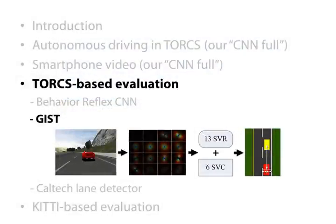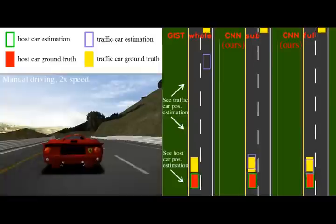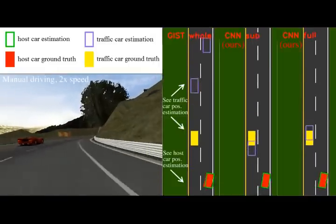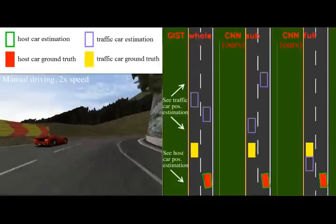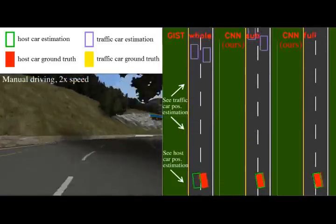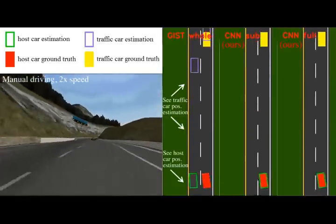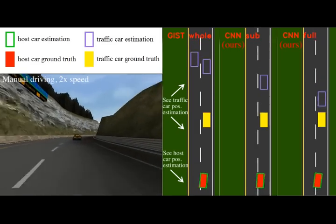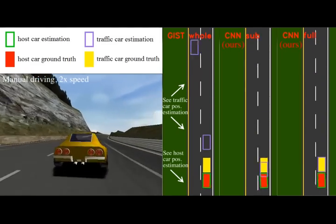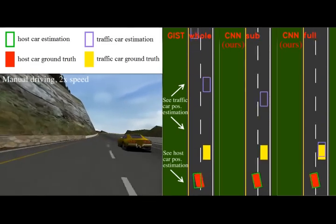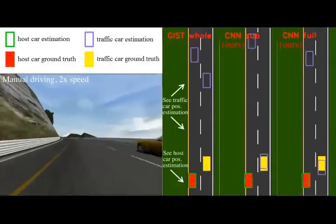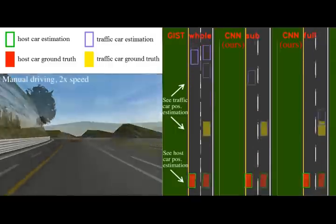We compare the perception accuracy between the gist-based system and our direct perception CNN. The different systems are running on the same testing set collected by having a human player manually drive on the tracks. The lane perception of the gist-based system is less accurate than ours, and its car perception works poorly.